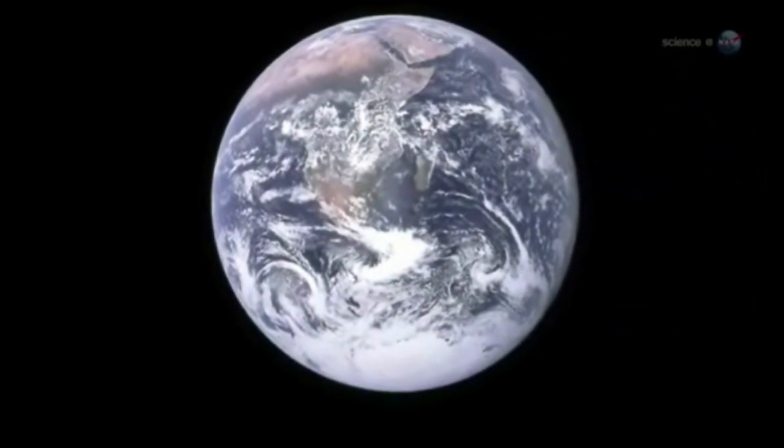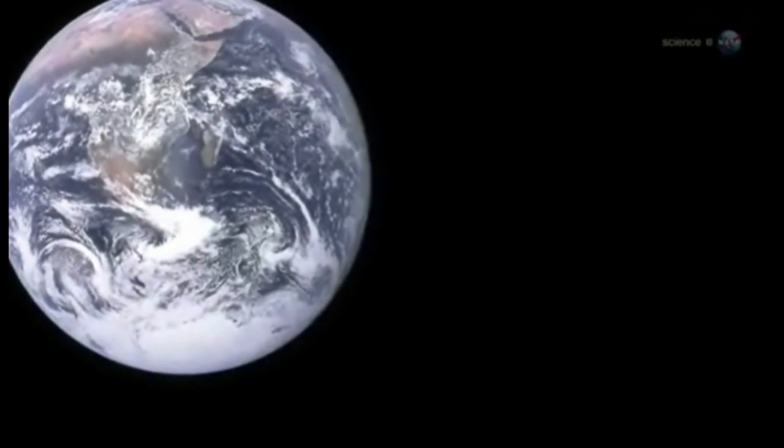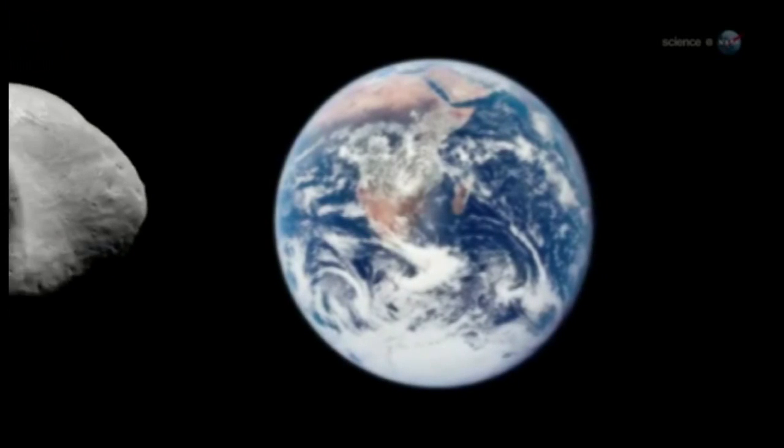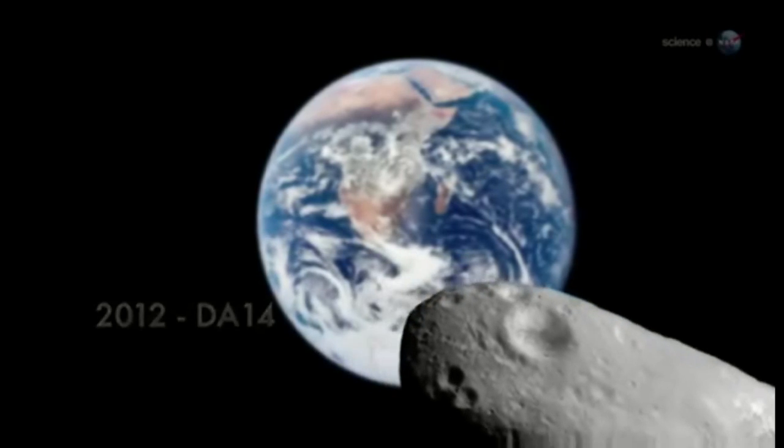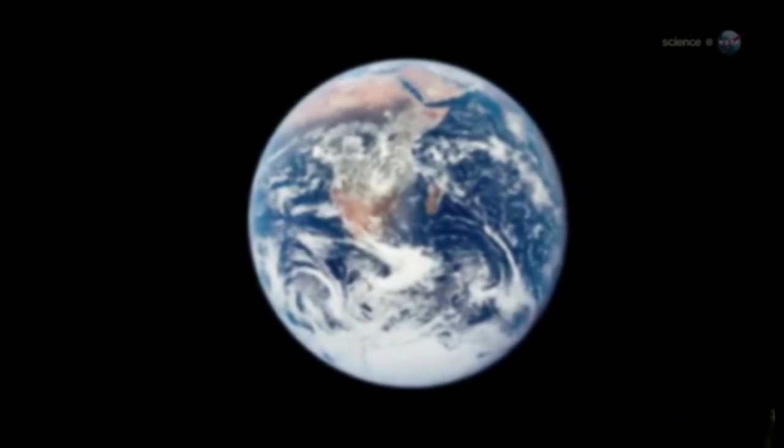On February 15th, an asteroid about half the size of a football field will fly past Earth, only 17,200 miles above our planet's surface. There's no danger of a collision, but the space rock, designated 2012 DA14, has NASA's attention.